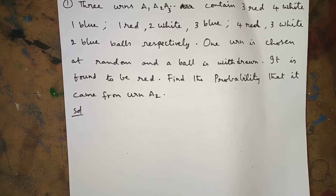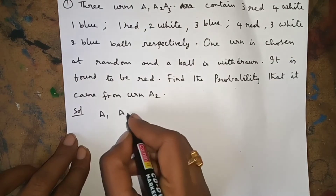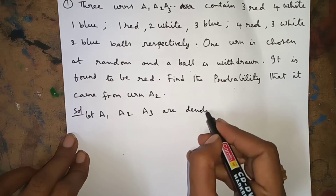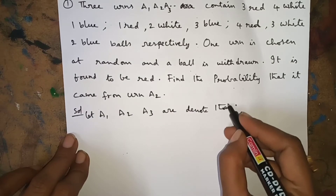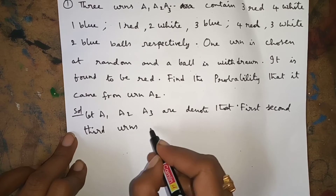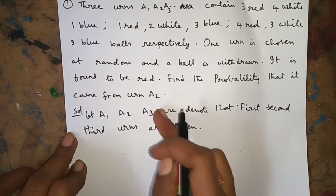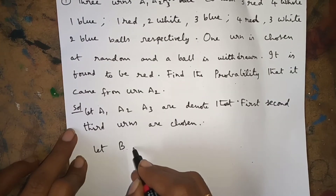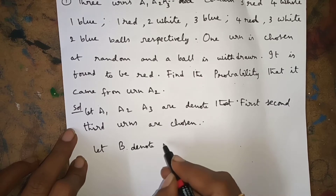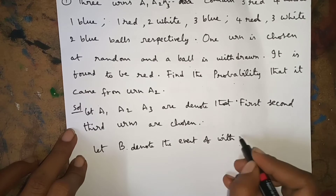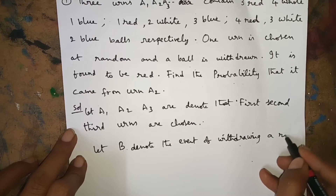Let A₁, A₂, A₃ denote the respective events that the first, second, and third urns are chosen. Let B denote the event of withdrawing a red ball.